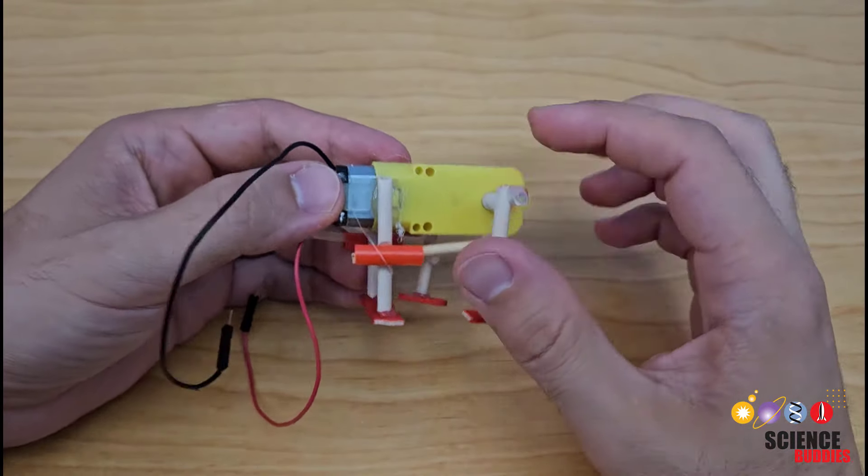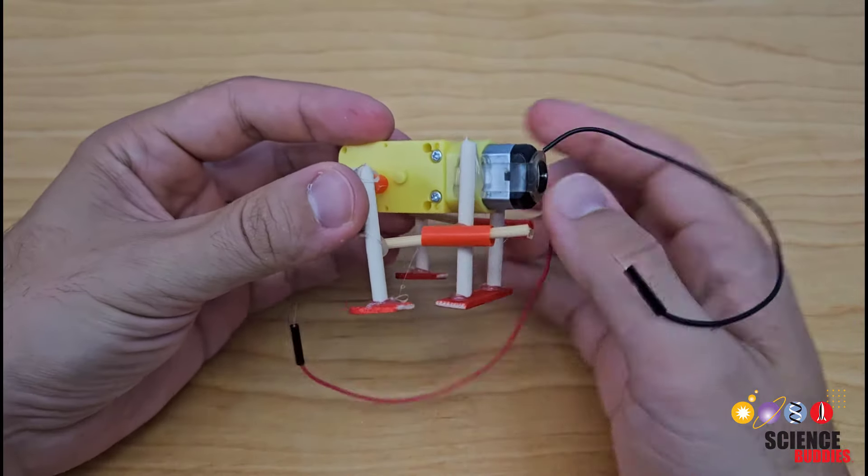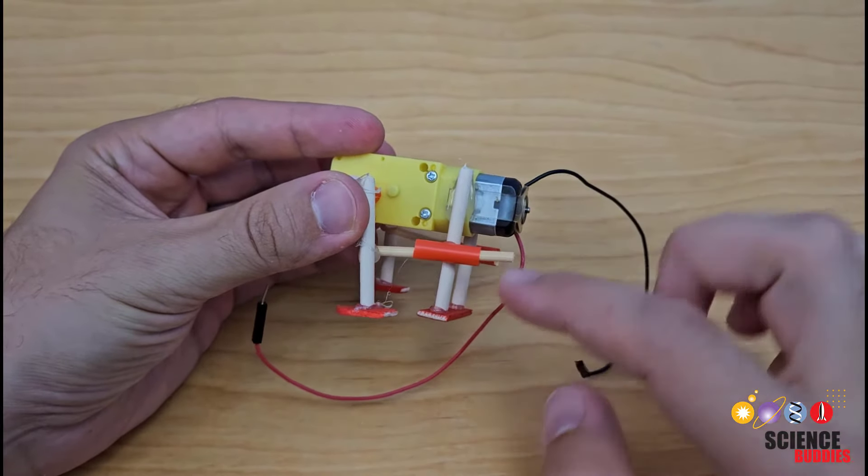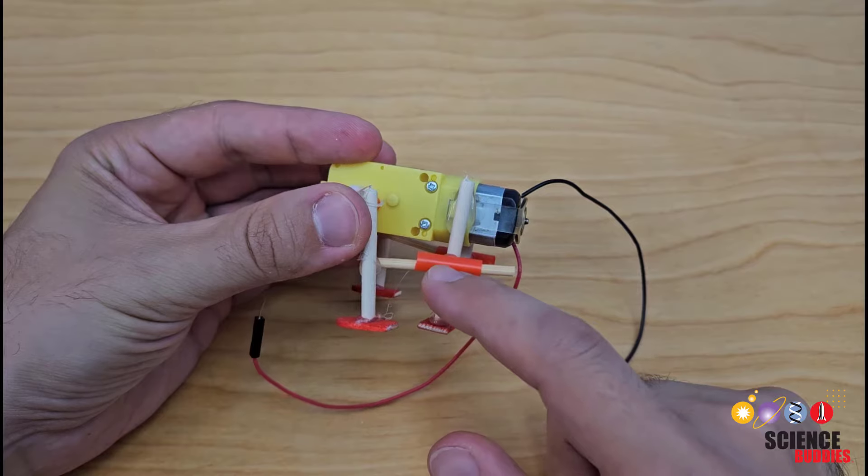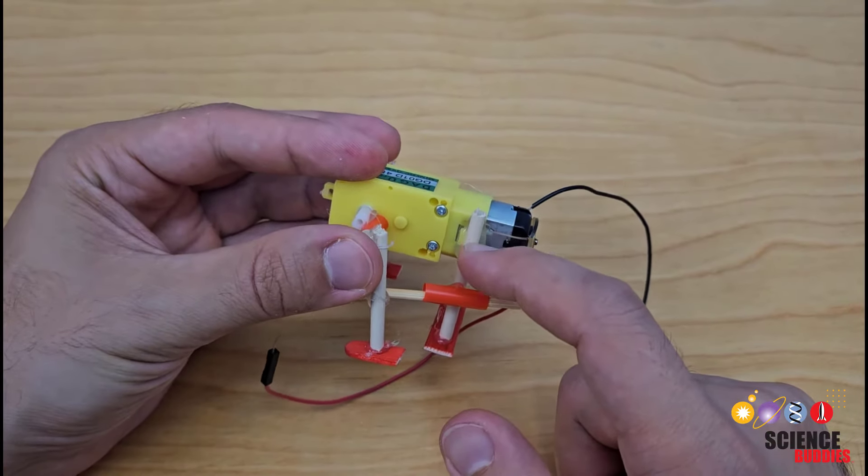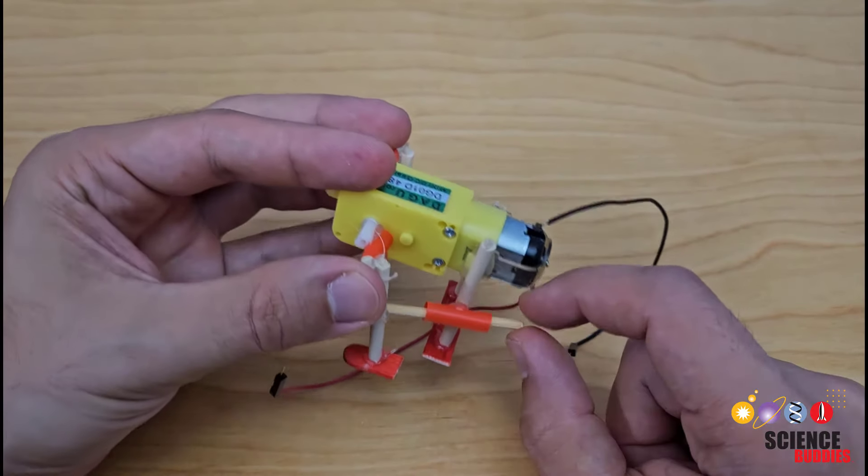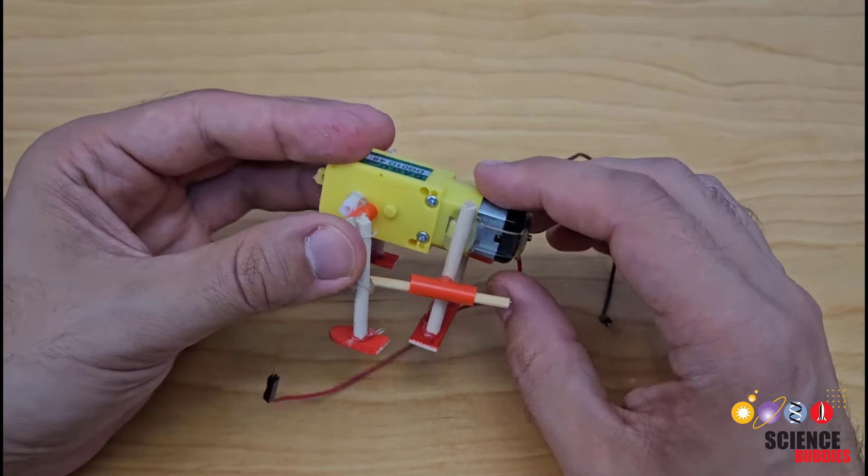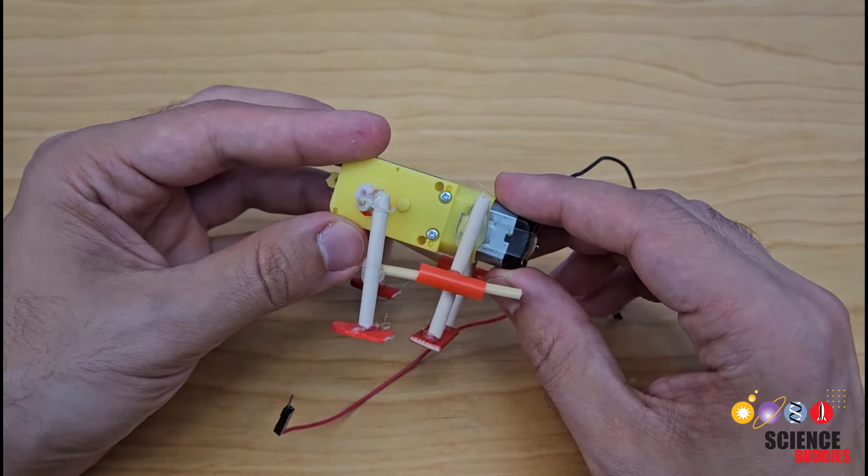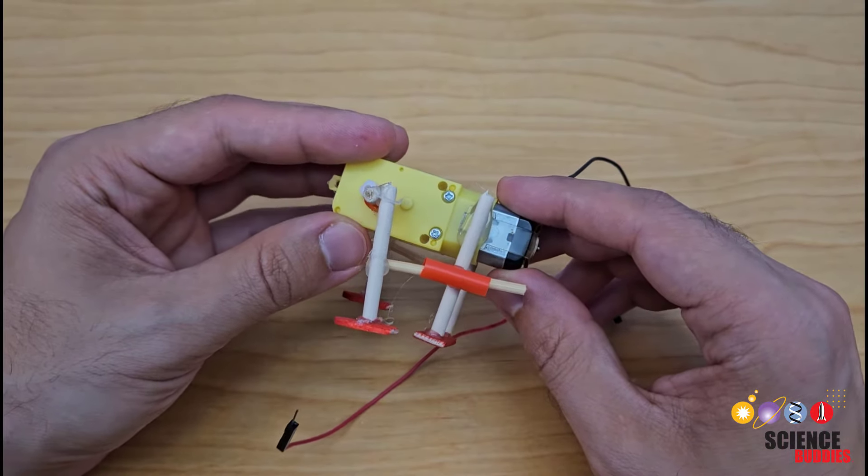You can see here I've done that for both legs. Again, gluing a dowel or skewer perpendicular to the leg and then gluing a piece of straw perpendicular to the rear vertical support and threading the dowel through the straw. We are almost ready to connect power and see our robot walk but we need to do one more thing.